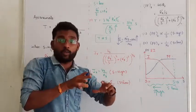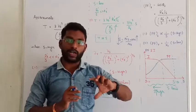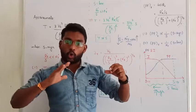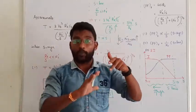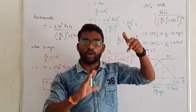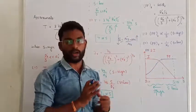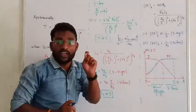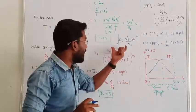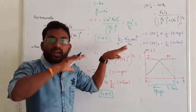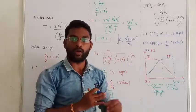The slip value in an induction machine is high at starting. As the rotor speed increases and gets close to synchronous speed, the slip value becomes low. So the conclusion is: the slip value is high when the moment we are starting the induction machine, and the value of slip is going to be low when your machine is reaching steady state.